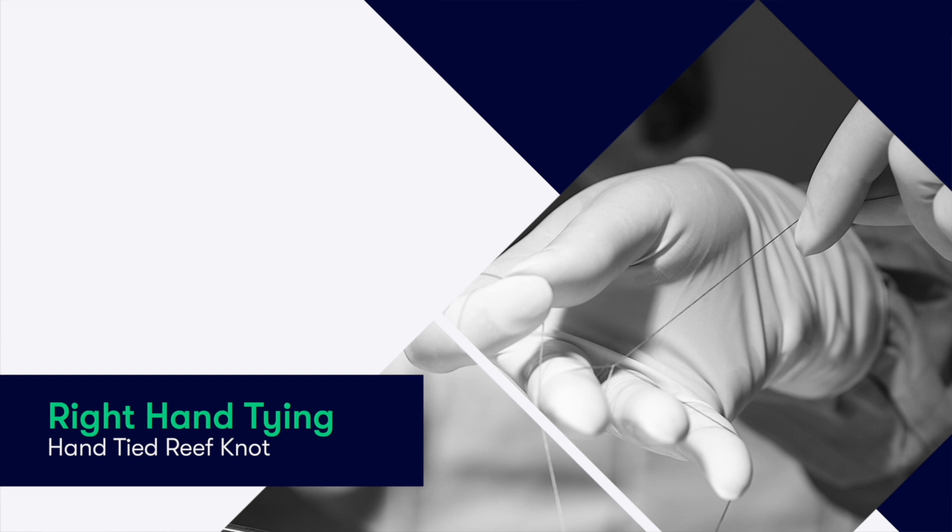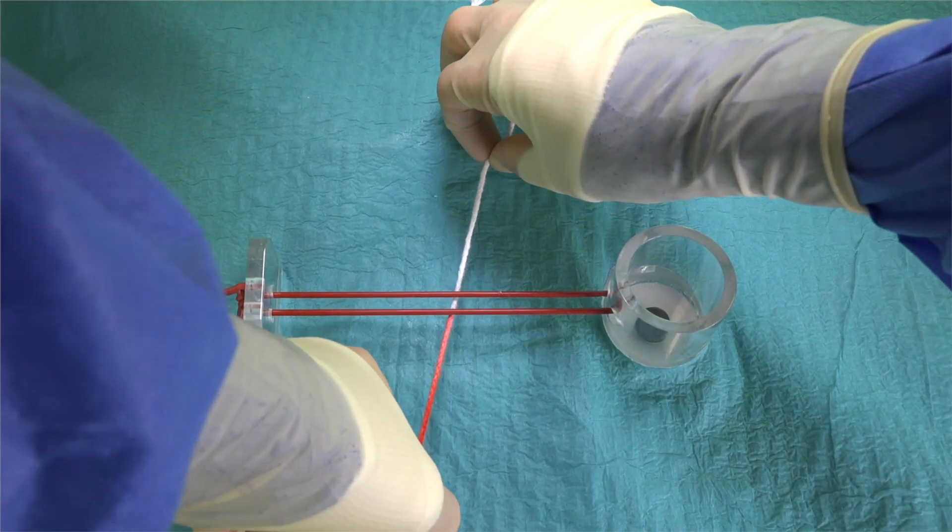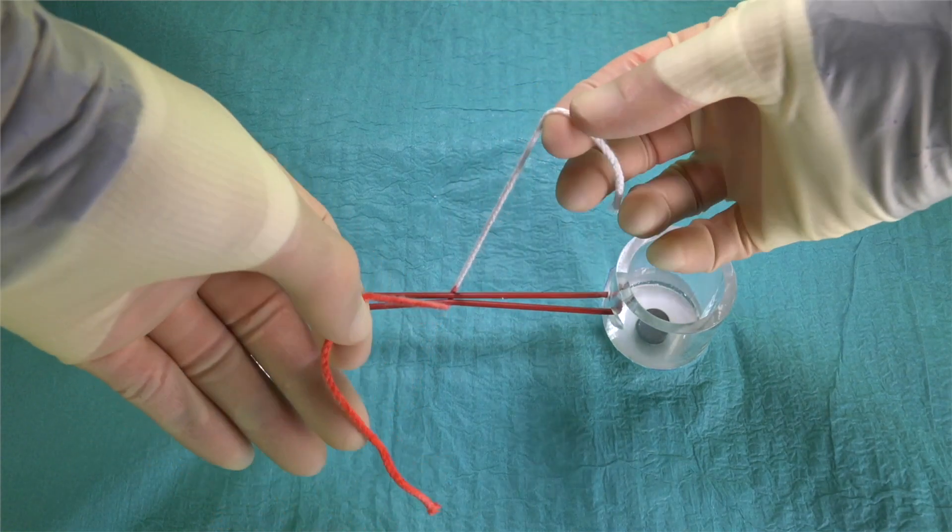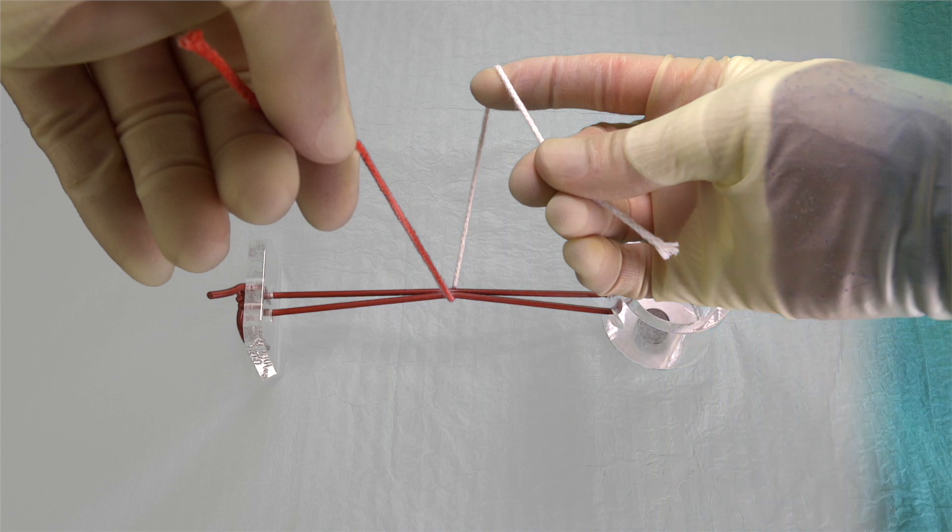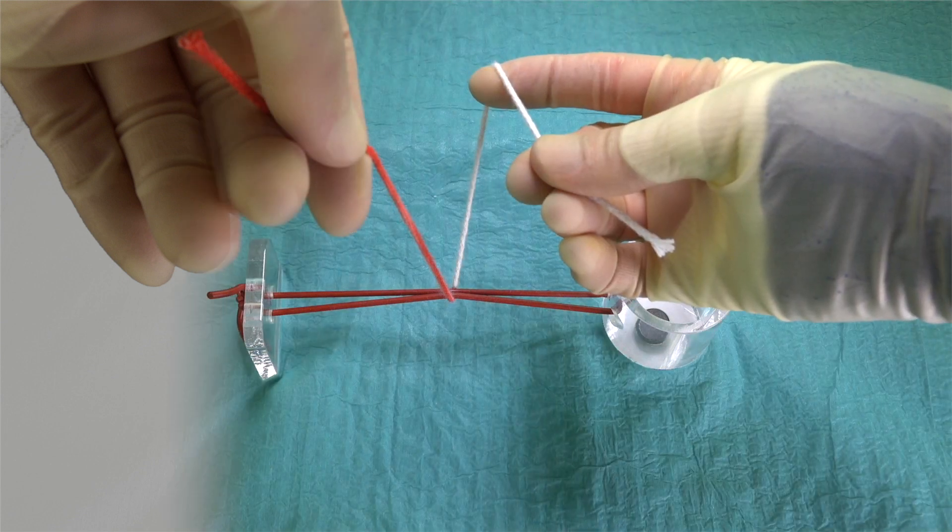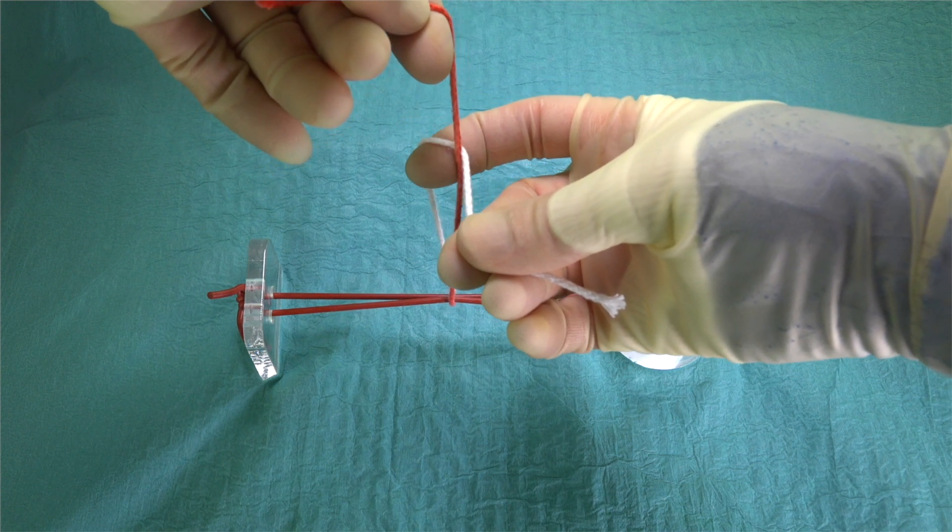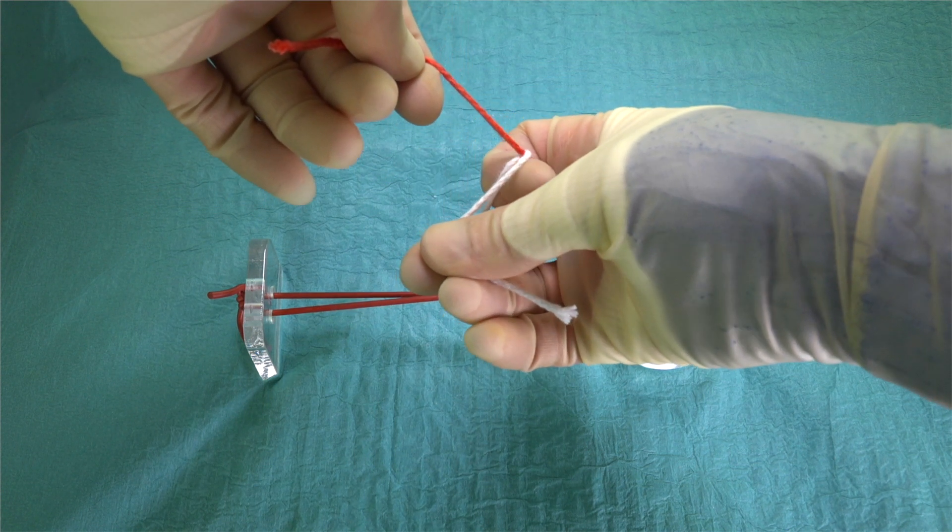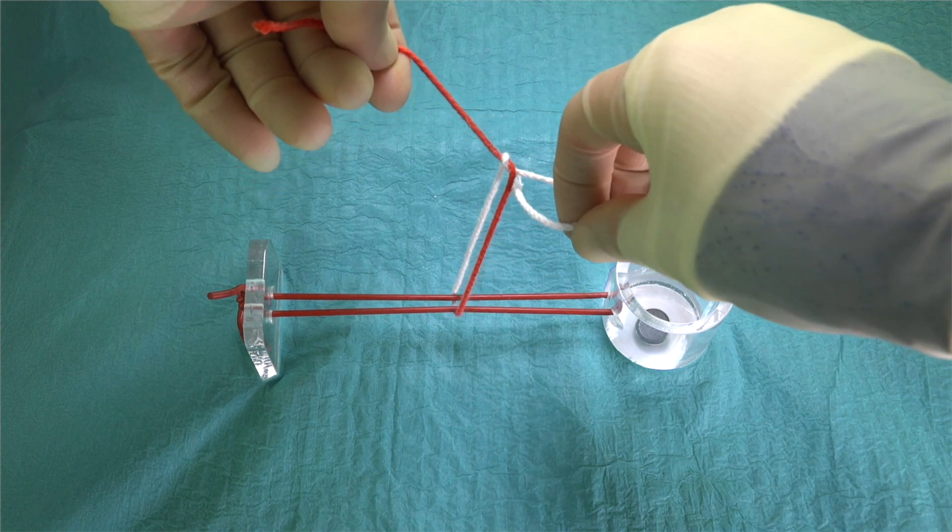Now, if we look at the tie being performed by the right hand, we start with the short end of the suture lying away from us. We pick this up between the thumb and the middle finger of our right hand. We then use the index finger of the right hand to extend the suture out. The long end of the suture that is in our left hand is brought over the right index finger. The right index finger then hooks around the short end of the suture and pulls it through the loop that has been created.